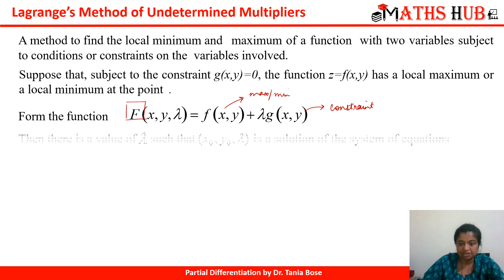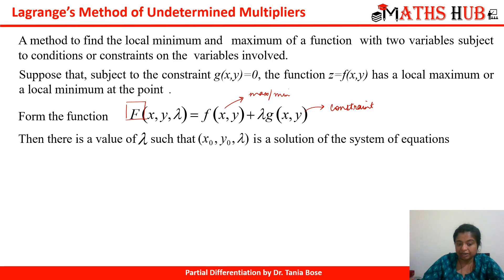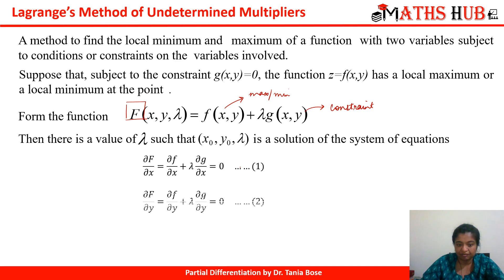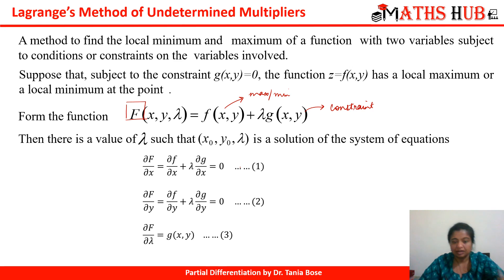To proceed further, we find the value of λ by solving a system of equations. We take the partial derivative of F with respect to x — equation number 1 — and the partial derivative of F with respect to y — equation number 2. We equate them to 0 and solve these equations along with the given constraint to find the values of λ.